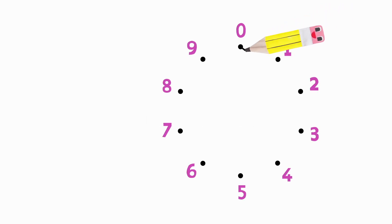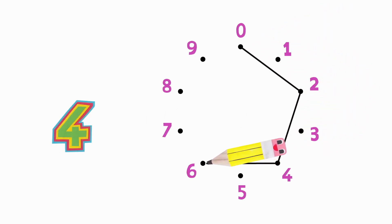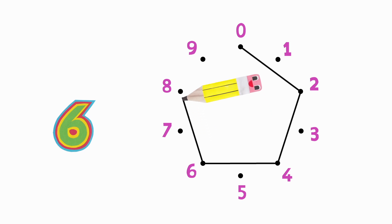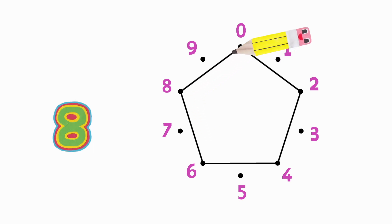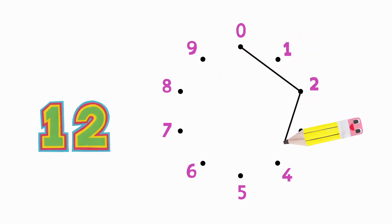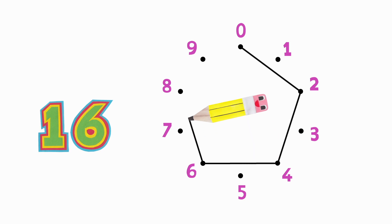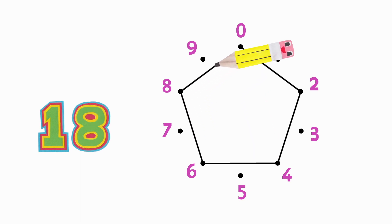Two times table. Two, four, six, eight, ten, twelve, fourteen, sixteen, eighteen, twenty.